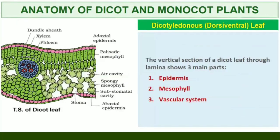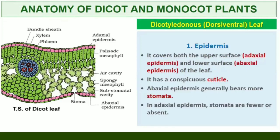Dorsiventral Leaf or Dicotyledonous Leaf. The vertical section of a dorsiventral leaf through the lamina shows three main parts: epidermis, mesophyll, and vascular system. The epidermis covers both the upper surface (adaxial epidermis) and lower surface (abaxial epidermis) of the leaf and has a conspicuous cuticle. The abaxial epidermis generally bears more stomata than the adaxial epidermis.